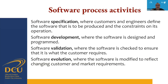Software process activities start with specification — defining what software is to be produced and the constraints on its operation. Then comes software development where the software is designed and programmed, followed by the validation stage where it is checked to ensure it meets customer requirements. Finally, software evolution is where the software is modified to reflect changing customer and market requirements.